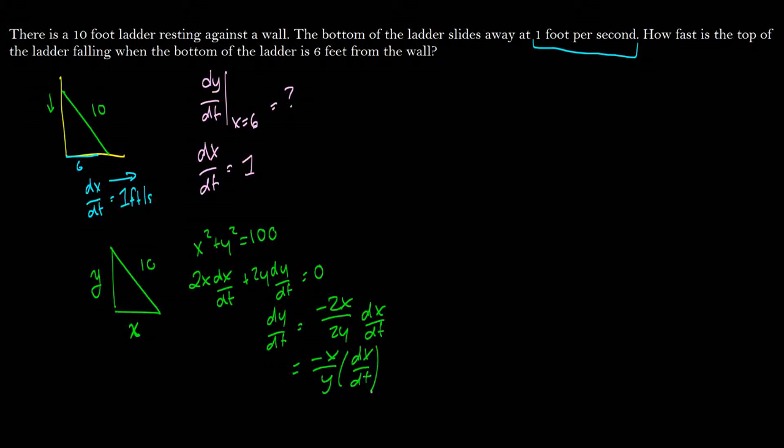Okay, so now we have our formula, and now we can start plugging in our x and y values and our dx/dt values. So this is going to be equal to, we have negative 6 since x is 6, over, we don't know y yet, but we know that dx/dt is equal to 1.